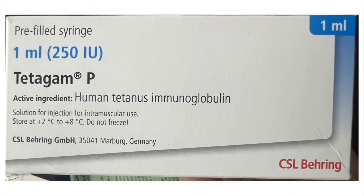This is the immunoglobulin available in our hospital. As mentioned, if less than 24 hours have passed, the patient receives 250 units (one ampoule), but if more than 24 hours have passed, they need to receive two ampoules — 500 units. Thank you.